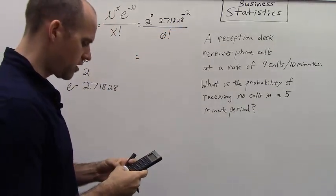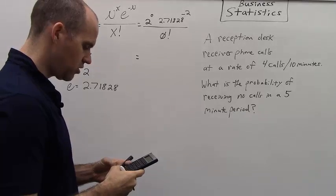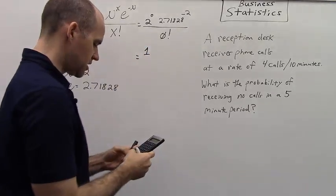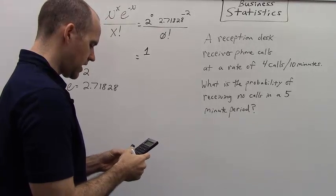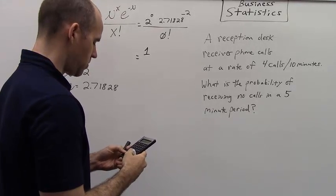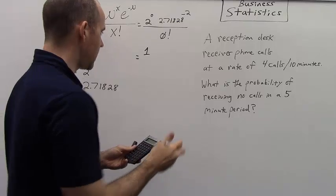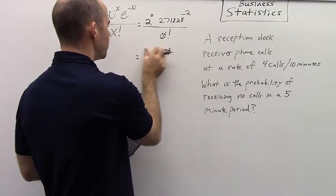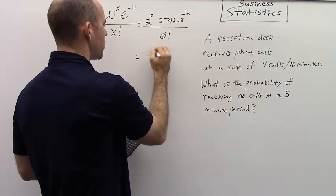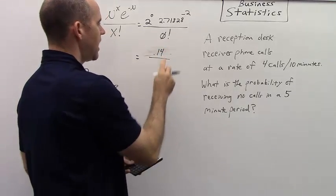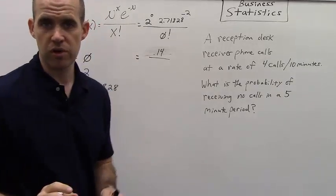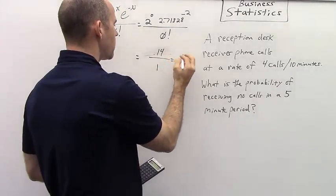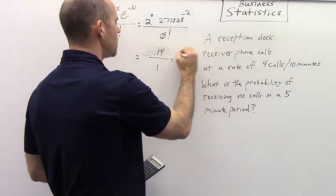So let's solve for the numerator. Two raised to the value of zero is just going to be one, and then if we take the 2.71828, and we're raising that to the value of negative two, that's one times 0.14. So we basically know that the numerator is 0.14, and if we divide by zero factorial, zero factorial is actually one, so 0.14 divided by one is 0.14.